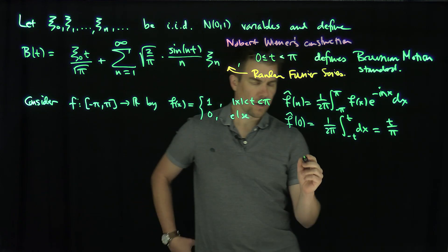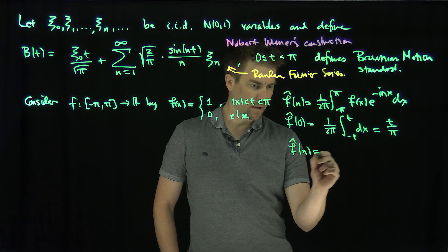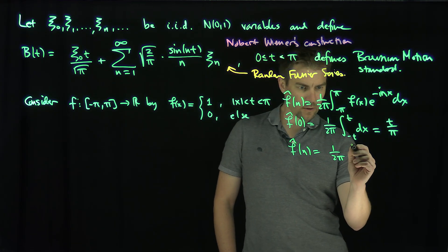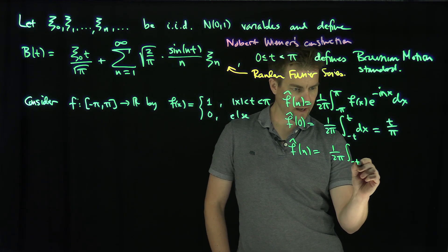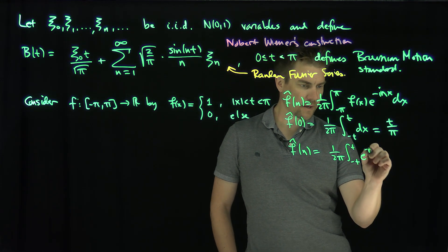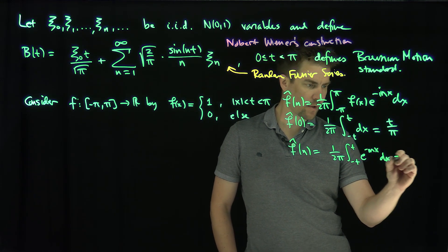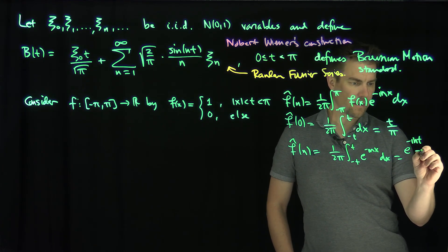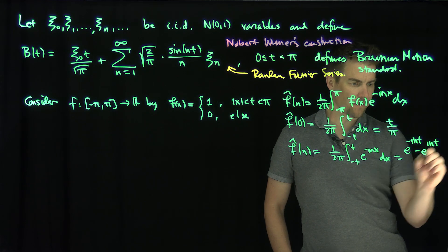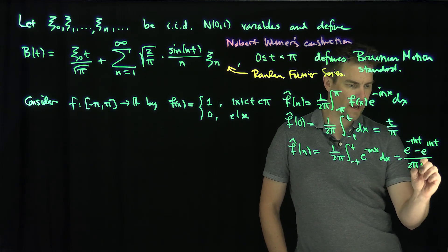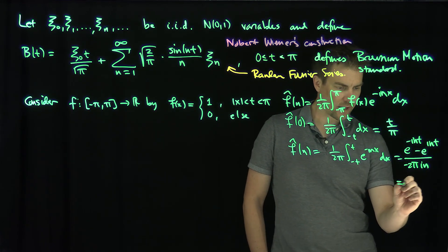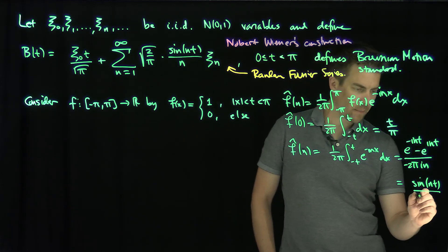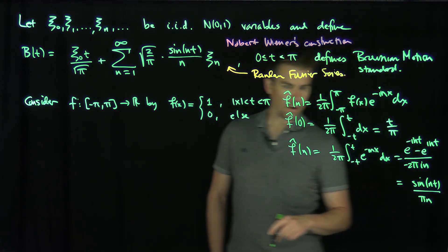So the 0 mode, and once it's an arbitrary n mode, f̂(n) is going to be 1 over 2π, and then the integral from -t to t of e^(-inx) dx, which if we evaluate it is going to be e^(-int), and then minus e^(int) over 2πin with a negative sign. And so we see this is just going to be the sine of nt over πn.